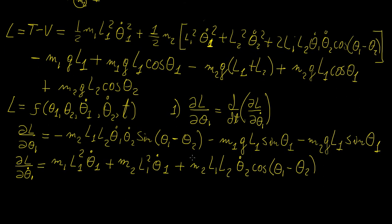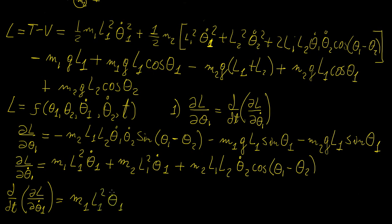Now the tricky part is we need to differentiate this whole expression with respect to time — d/dt of the full quantity. We have to use the chain rule and be very careful. The first two terms are fairly straightforward: differentiating linear functions of theta1 dot gives M1 L1 squared theta1 double dot plus M2 L1 squared theta1 double dot. Now we're differentiating a product of two functions that are both functions of time, so we need the product rule.